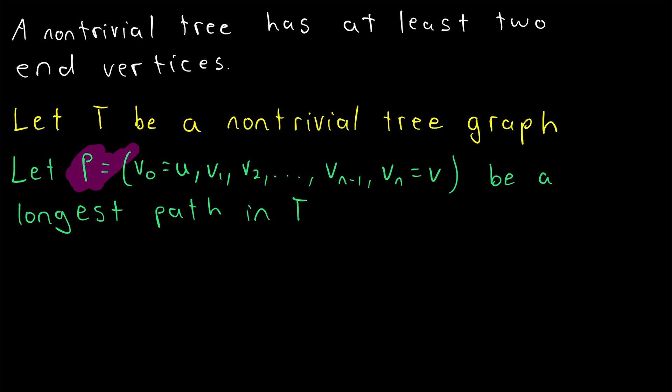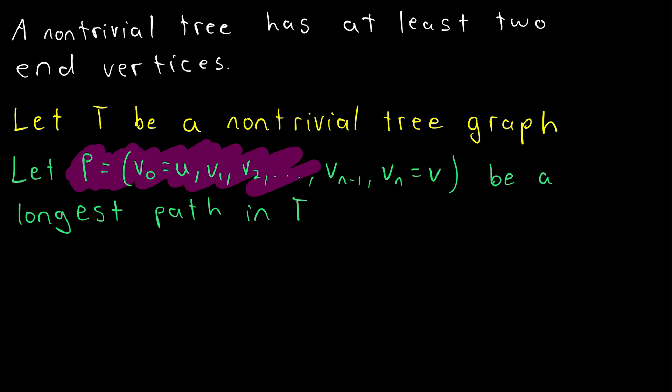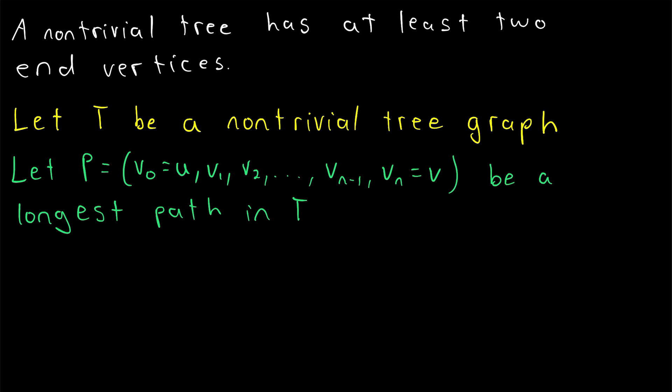And of course, P might not be the only path in this graph with this length, but there is no path that's longer than P. Another subtle but important thing we might want to point out here is that we know U is not equal to V. The first vertex is not the same as the last vertex. In other words, this path has a length of at least one. And we know that's the case because our graph T is non-trivial. So it's connected, it's got at least two vertices, so the longest path has to have a length of at least one.